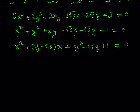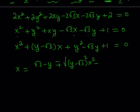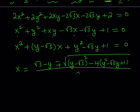Let's write down the quadratic formula. x equals negative b — which is square root of 3 minus y — plus or minus the square root of b squared, which is (y minus root 3) squared, minus 4ac, where a equals 1 and c equals y squared minus root 3 y plus 1. All divided by 2a, which is 2.